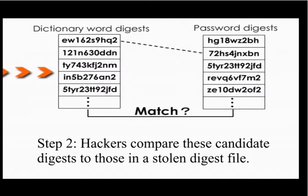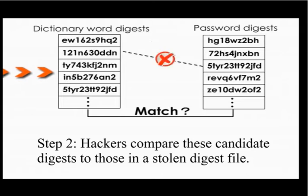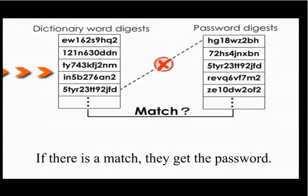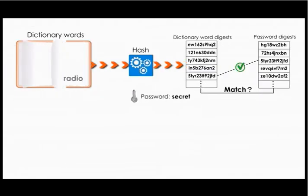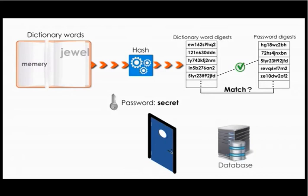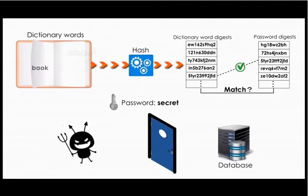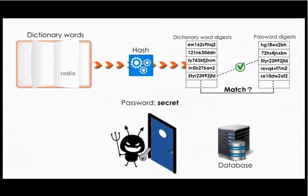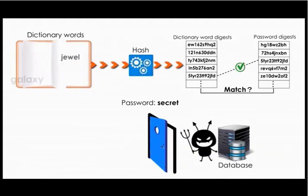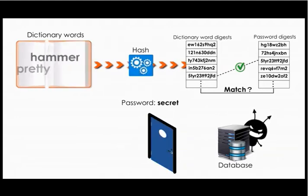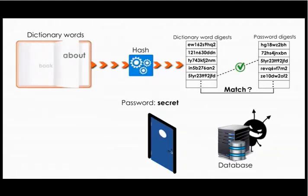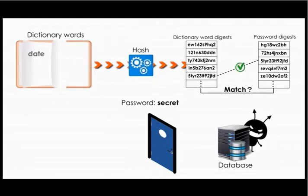Step 2: Hackers compare these candidate digests to those in a stolen digest file. If there's a match, they get the password. Although such an approach would seem impractical to do manually, computers can do this very fast and run through millions of words in a few hours.